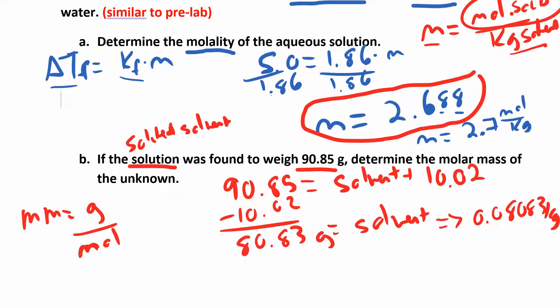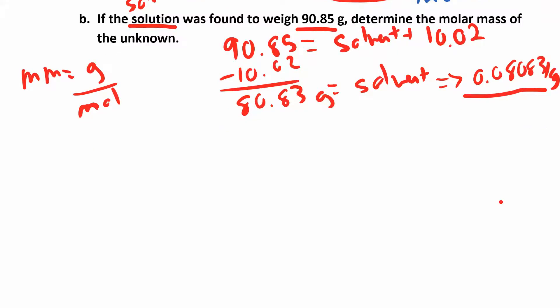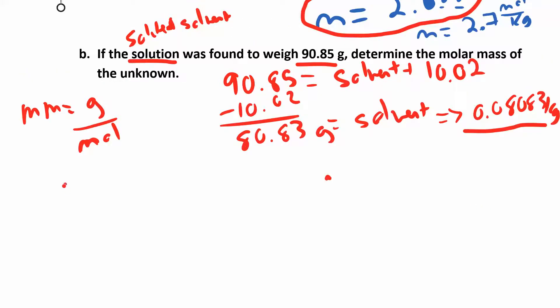So what are we trying to do? We're trying to find the moles of the solute. So I have the molality from part A, and now I have the kilograms of the solvent that I got by subtracting the solution and the solvent. So now since I have the kilograms of the solvent and I have the molality, I'm going to multiply those together to get the moles. My molality was 2.688 molal - that's moles over kilograms - and then I'm going to multiply by the kilograms of the solvent 0.08083 to give me the moles, which is 0.2173.